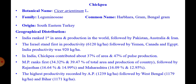In India, chickpea contributes 37% of the area and 47% of pulse production. The overall trend in area, production and productivity over the last three planned periods showed significant increase. Madhya Pradesh ranks first, contributing 34.32% and 39.47% of the total area and production of the country, followed by Rajasthan and Maharashtra. The highest productivity is recorded by Andhra Pradesh at 1239 kg per hectare, followed by West Bengal and Bihar.